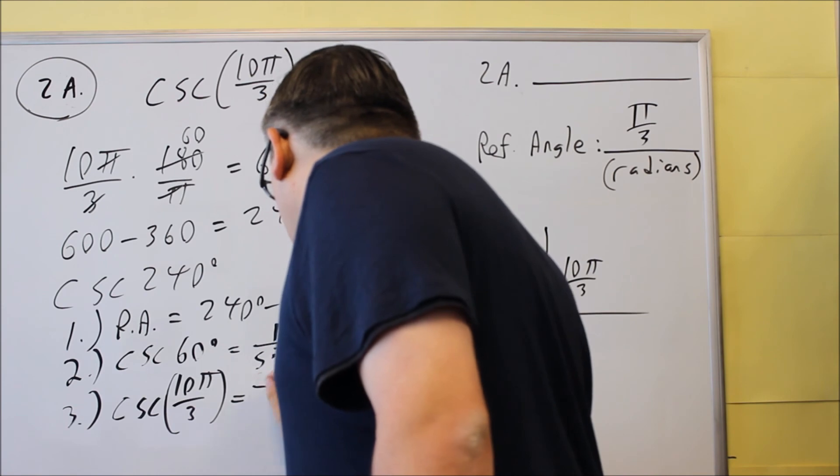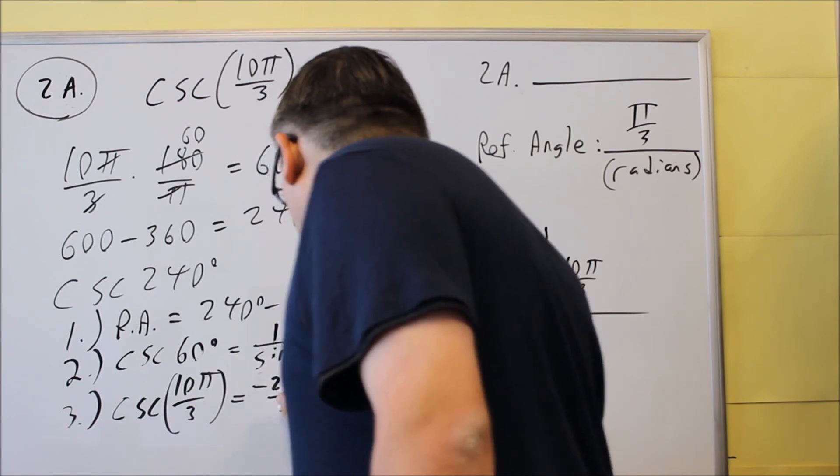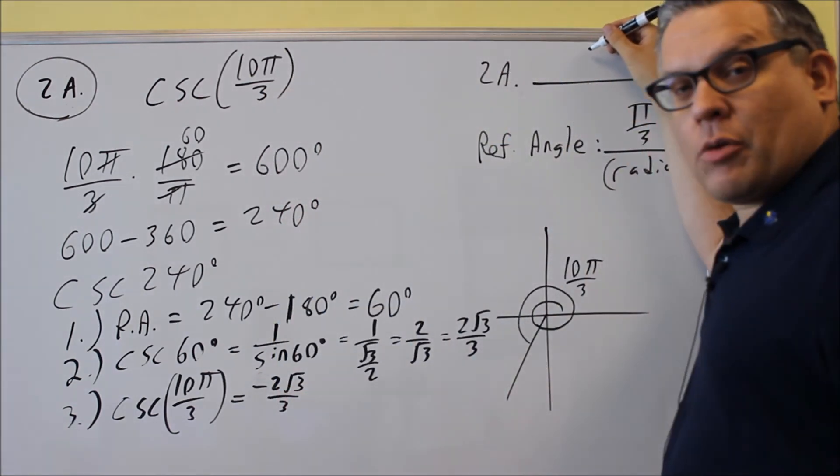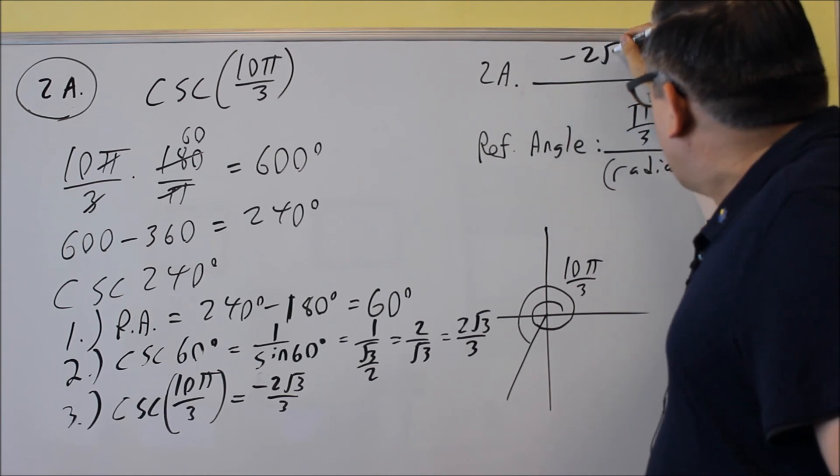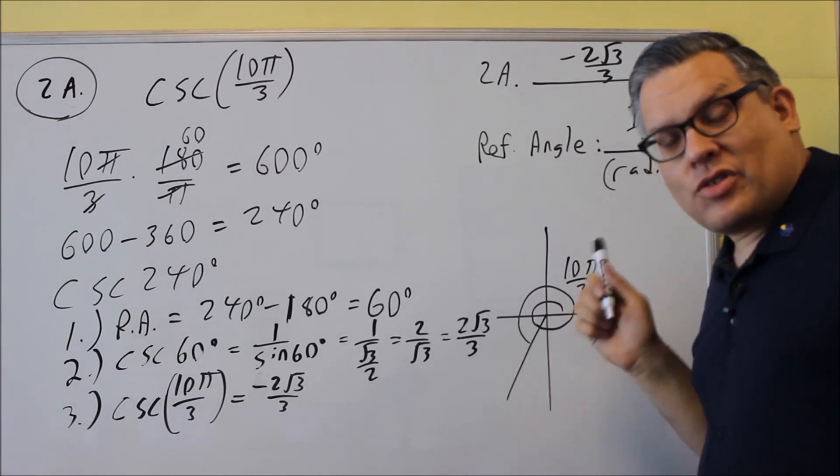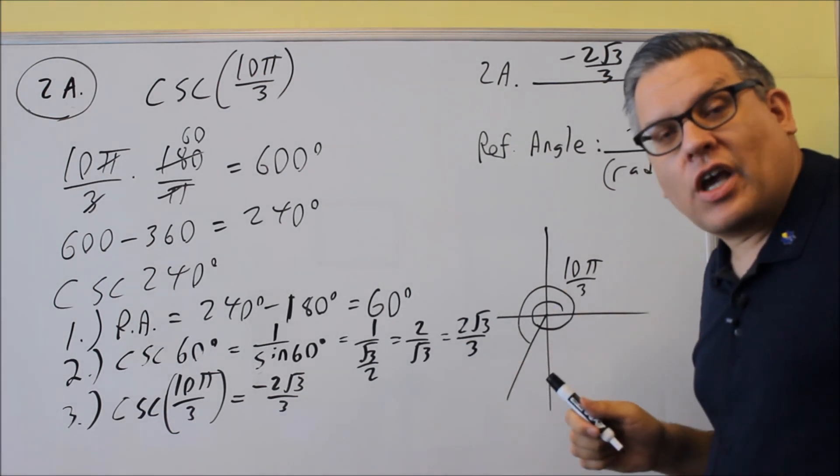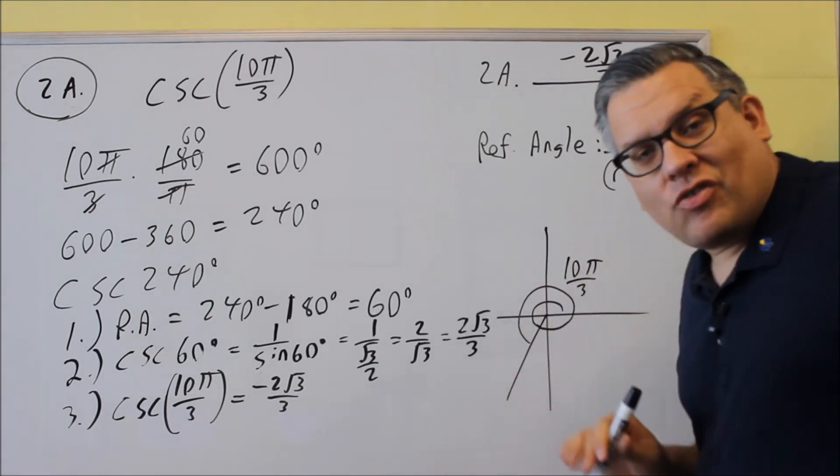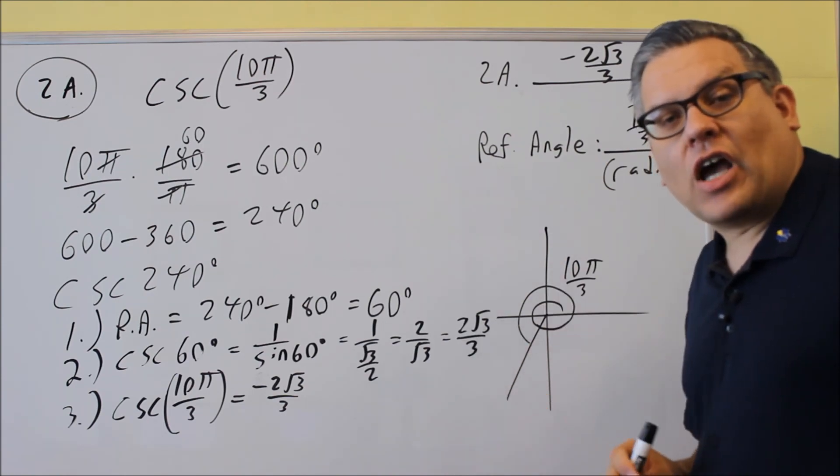So I'm going to put a negative value there, negative 2 square root of 3 over 3. And that's exactly what I'm going to put up here for the exact value. So negative 2 square root of 3 over 3. Again, it's negative because you're in the third quadrant. Sine is negative, so you want to make sure you understand what is positive and negative in each of the quadrants. That's something else you want to have on your note card.